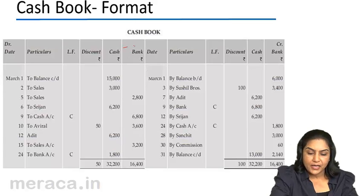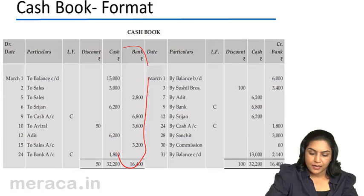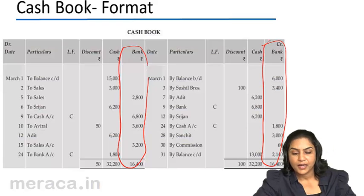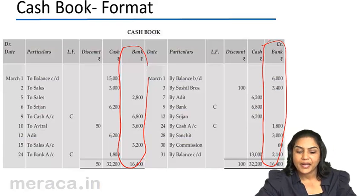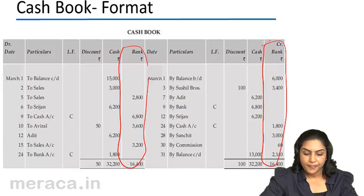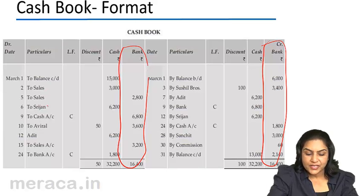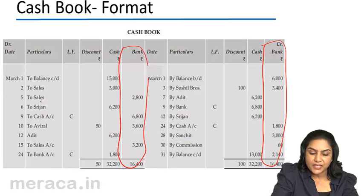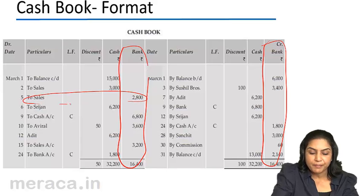The bank on the debit side and the bank on the credit side is a copy of the bank account. If you notice, sales transactions are here on the debit side, indicating that a check received on account of sales has been debited to the bank account.